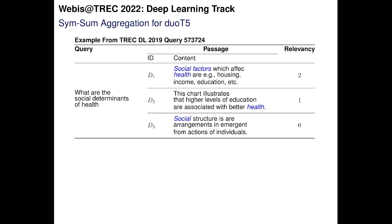Let me explain this with an example from the Deep Learning Track 2019. The query is 'what are the social determinants of health.' We have document D1 which talks about social factors affecting health — housing, income, education — and is highly relevant with a relevance score of 2. Document D2 explains that higher levels of education are associated with better health, so it is relevant but less so, with a score of 1. Document D3 is not relevant because it talks about social structure.